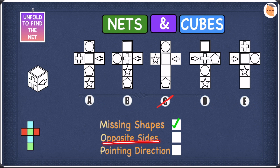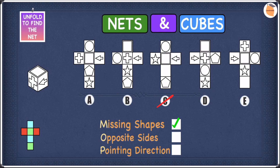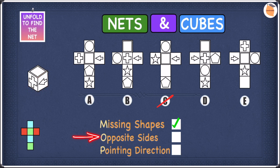Let's move into opposite sides. In terms of opposite sides, if you have a look at the cube, we have a plus sign, an arrow, and a square, and as you can see all three of these shapes are next to each other. Because they're next to each other, this means they're not on opposite sides. According to the opposite sides rule, opposite sides can never be next to each other. So if we do find these shapes on opposite sides in any of the nets, we cross them off.